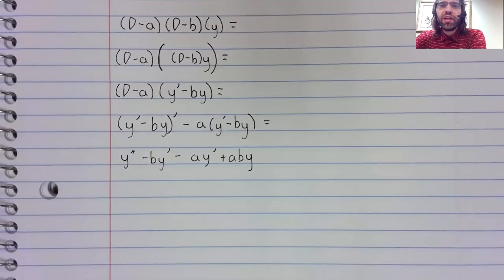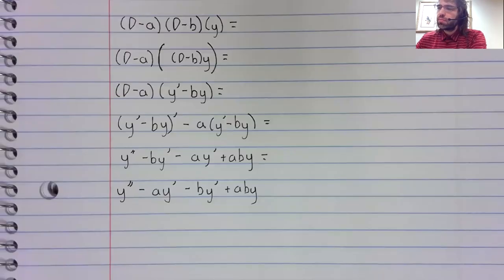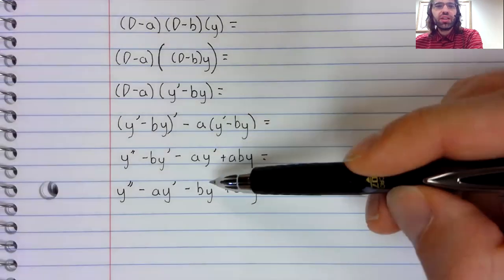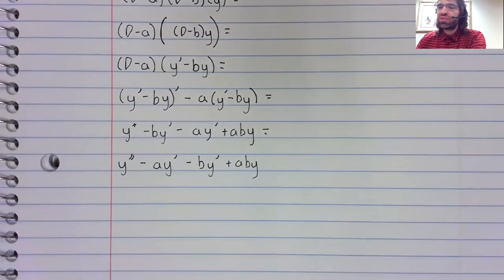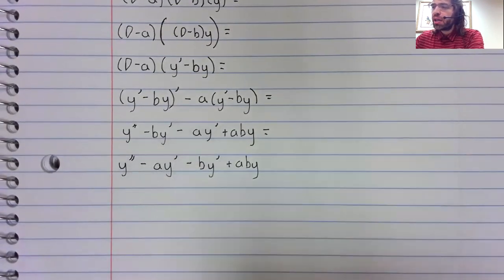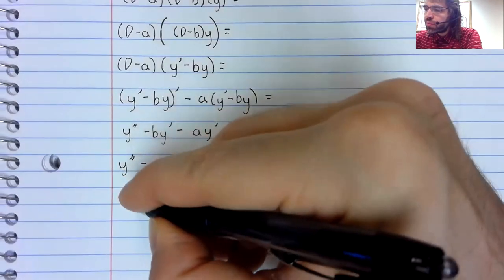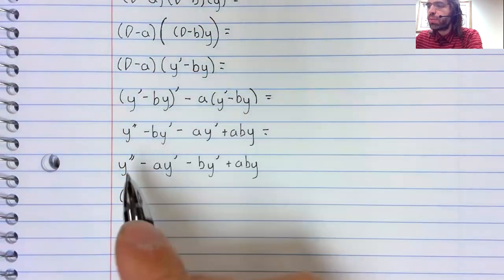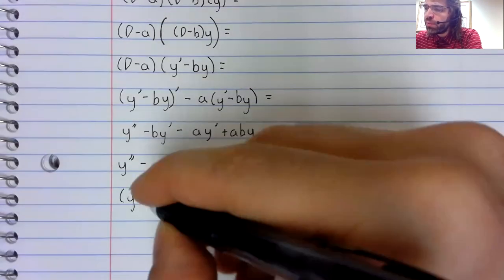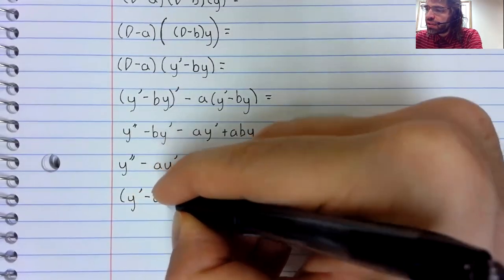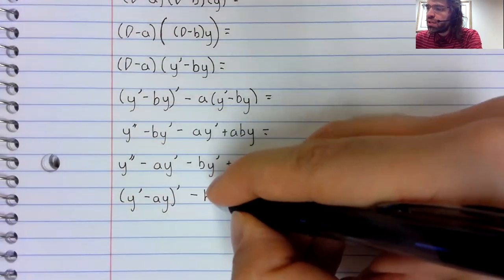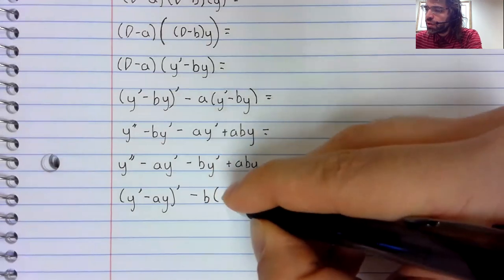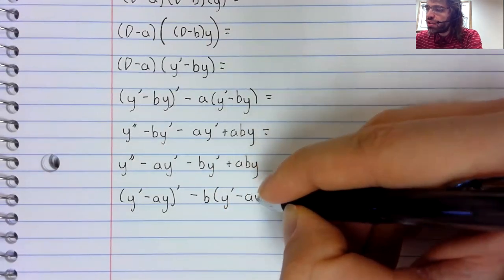And there's d minus a of d minus b of y. We'll rearrange these terms. And now we'll basically go back up this series of steps. y double prime minus a y prime is—sorry—y double prime minus a y prime minus b y prime minus a y.